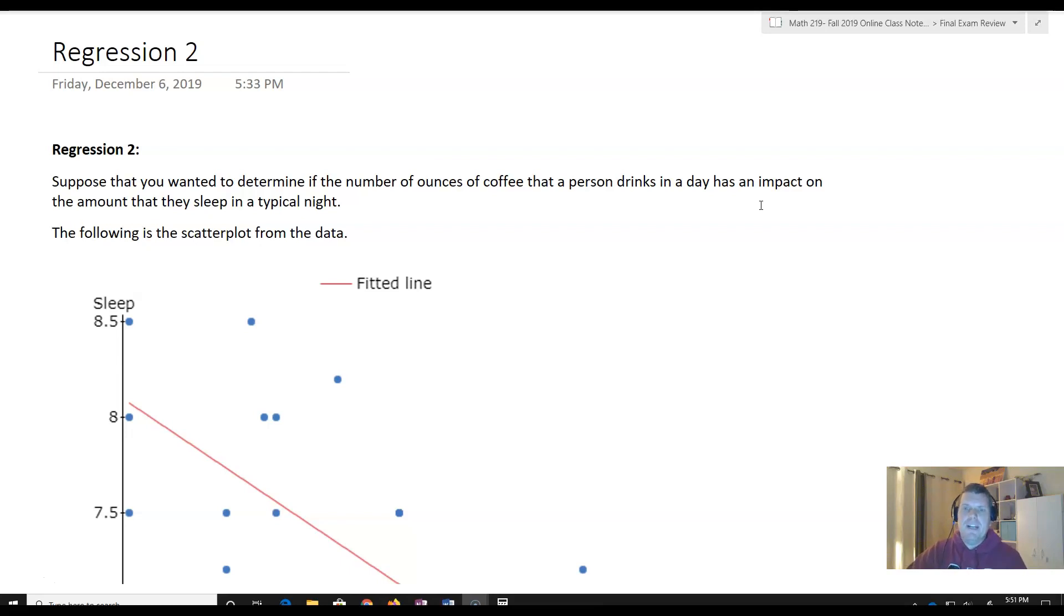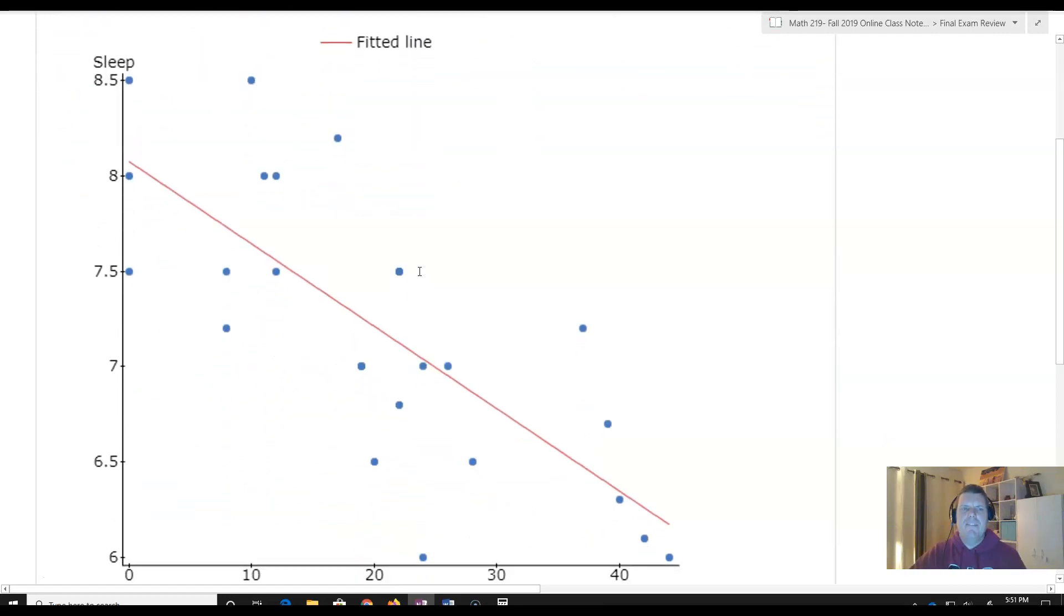Coffee would be your explanatory variable, right, because it's the thing doing the impacting. So there's explanatory or the number of ounces. And my response is the amount that they sleep in a particular night. So the number of hours they sleep in a particular night. And we look and we got here's the evidence. Well, I look at this and this one actually happens to have what's called a fitted line. It's your regression line.